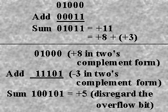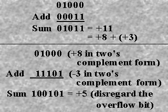There is an additional bit generated called an overflow. If the overflow is disregarded, we have 0, 0, 1, 0, 1, which is plus 5 — the correct answer.